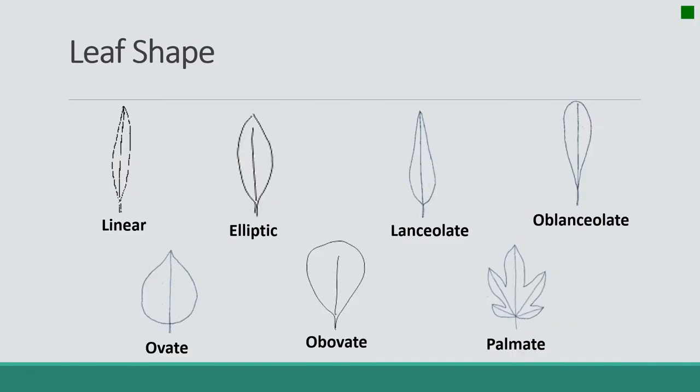Leaf shapes: we have linear, elliptic, lanceolate, oblanceolate, ovate, obovate, and palmate. Linear resembles a line — it is narrow with more or less parallel sides, much longer than it is wide. Elliptic is kind of the shape of an ellipse or a narrow oval — broadest in the middle of the leaf and narrower at the two ends, and generally much longer than wide.